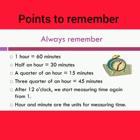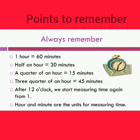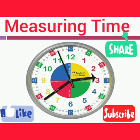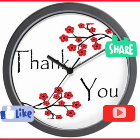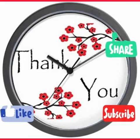Always remember: 1 hour is equal to 60 minutes, half an hour is equal to 30 minutes, a quarter of an hour is equal to 15 minutes, and 3 quarters of an hour is equal to 45 minutes. After 12 o'clock, we start measuring time again from 1. Hour and minute are the units for measuring time. I hope children, you will have understood about measuring time. Thank you, and please like and subscribe.